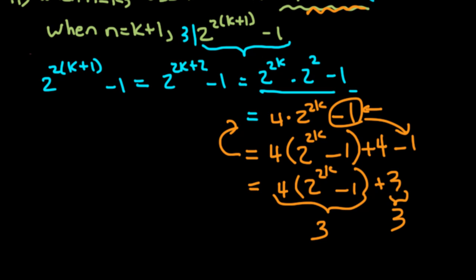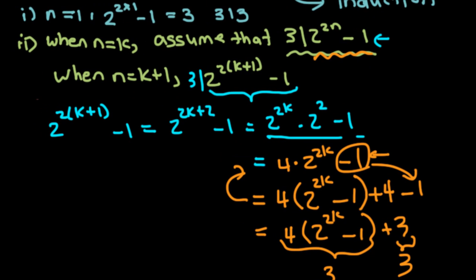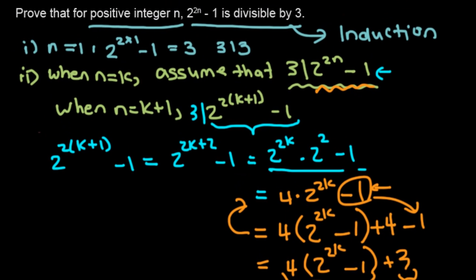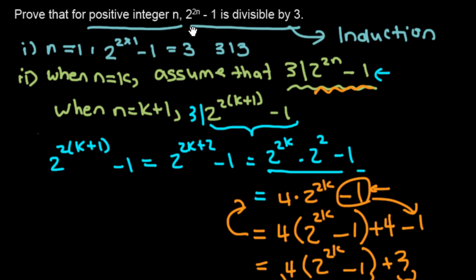Since we have shown that the identity holds for n equals 1, as we did in the beginning, our induction is complete. So 2 to the 2n minus 1 is always divisible by 3 for positive integers n.